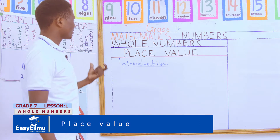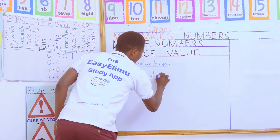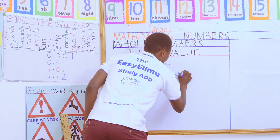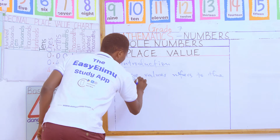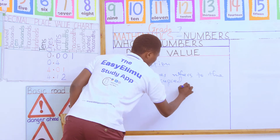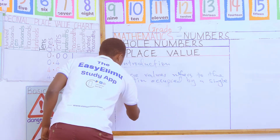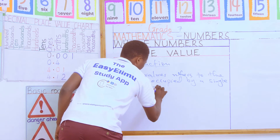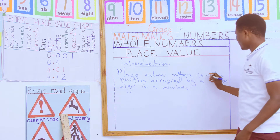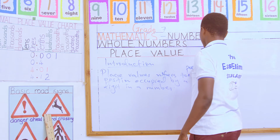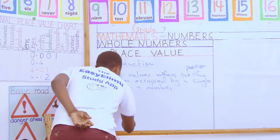Place value simply refers to the position occupied by a single digit in a number. In other words, when we talk of place value we are referring to the position that a single digit occupies in a number. For example, if you have the number 256, someone may ask you to state the place value of any digit in it.